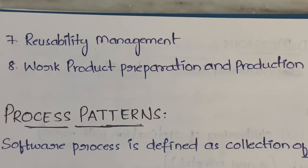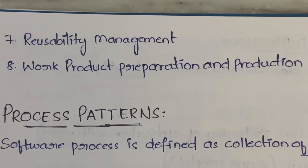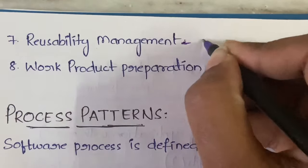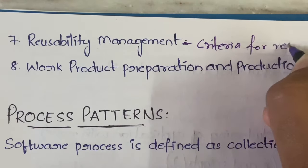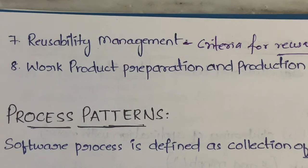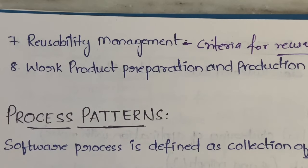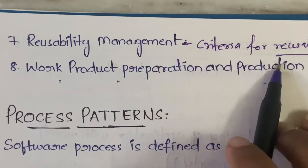The seventh activity is reusability management. Reusability means you must be able to use a software, work product, requirement, or part of software again. In reusability management, it defines the criteria for reusability — that is, if you want to use a software or work product again, what criteria must it satisfy in order to be reused.